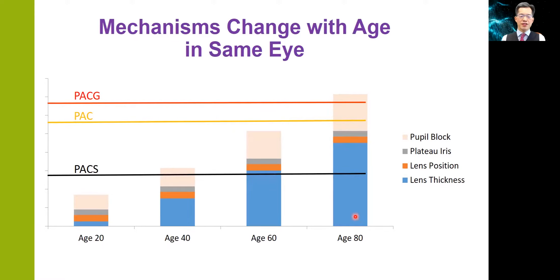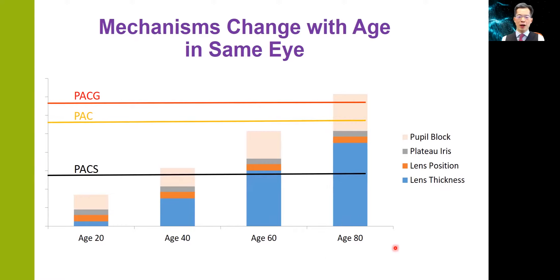In this second figure, it looks very similar, but this time it is actually the same eye going through different ages — at different time points. You can see that with increasing age, there is increasing predisposition to angle closure, very largely because of the increase in lens thickness. And with an increase in lens thickness, there is also possibly an increase in pupillary block component, so the risk of angle closure increases with age and with time.